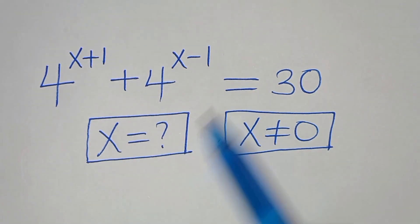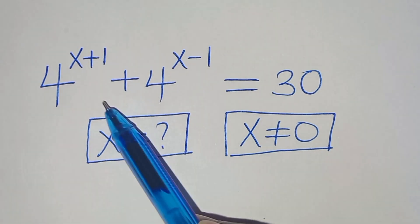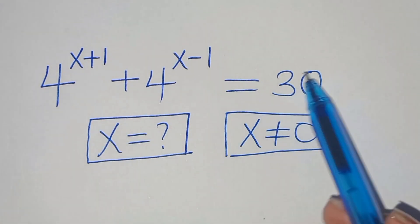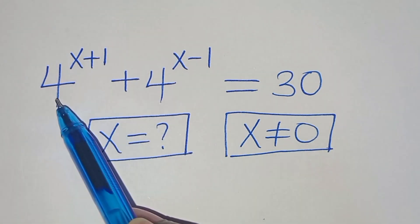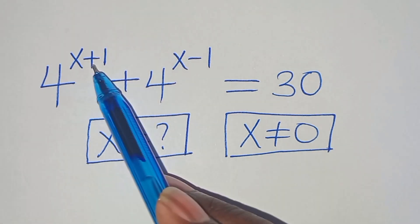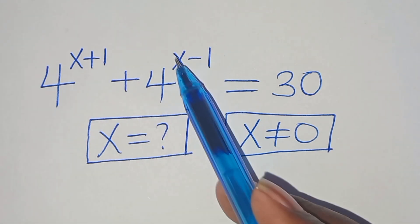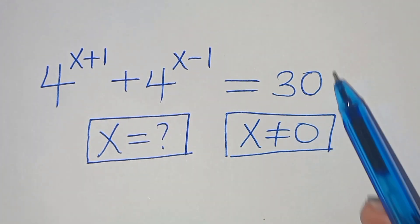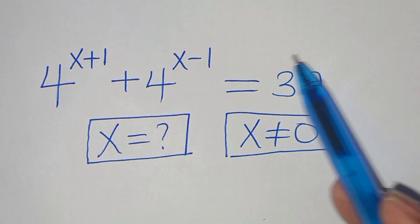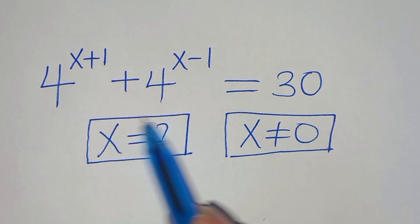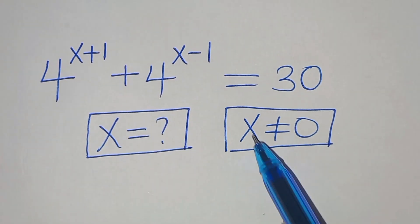Welcome. We're going to solve this exponential equation: 4 to the power of x+1 plus 4 to the power of x−1 equals 30. What is the value of x?